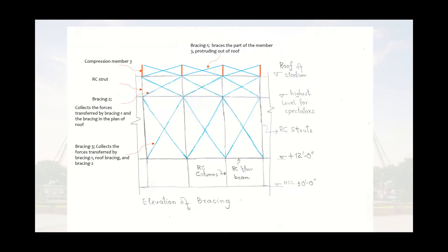Moving on to the vertical bracing of this stadium, the sketch presented here shows the arrangement and placement of vertical bracing in each bay. The cross bracing in the vertical plane located above the level of roof lends out-of-plane stiffness to the part of compression member 3 discussed in the earlier pictures protruding above the roof. The two levels of vertical bracing below the roof carry the forces transferred by the bracing 1 as well as the horizontal bracing in the plane of roof.